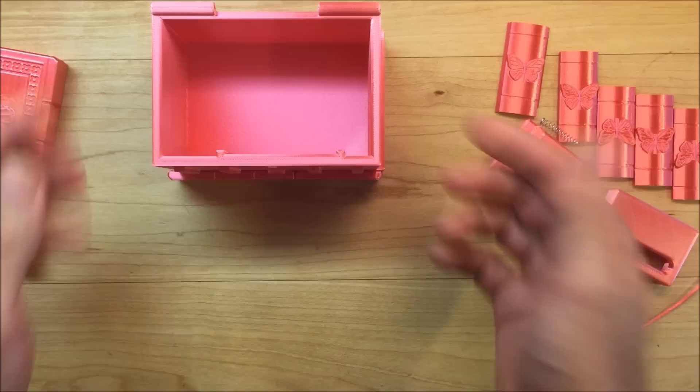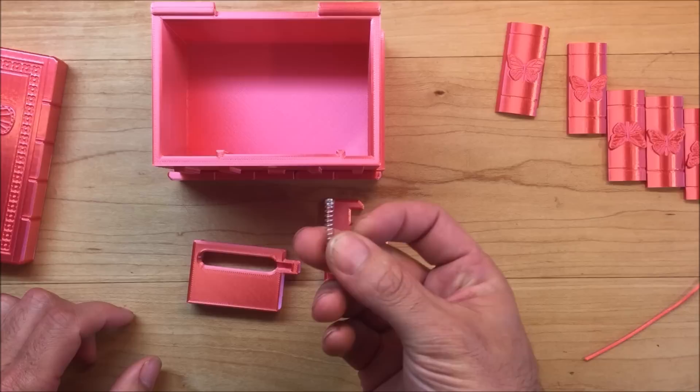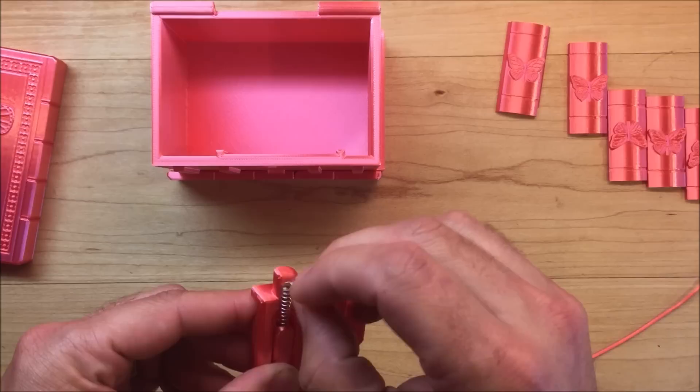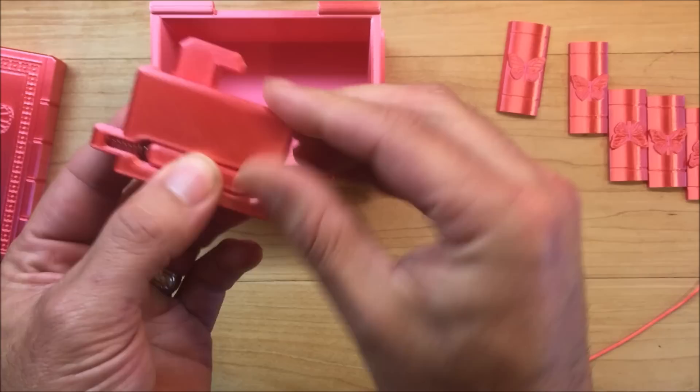Next step is the door catch. This is where the spring comes in play. Put the two pieces together and insert the spring. It should function like this.